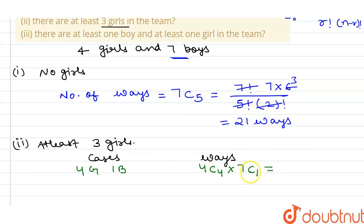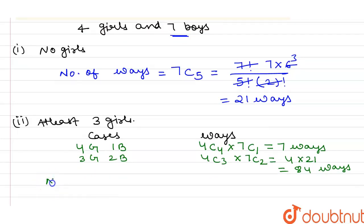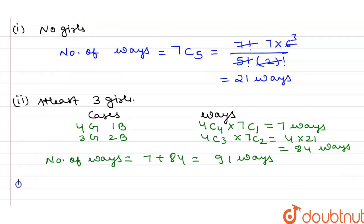4C4 × 7C1 equals 7 ways. Similarly, the second case is three girls and two boys. The number of ways is 4C3 × 7C2 = 4 × 21 = 84 ways. So total number of ways = 7 + 84 = 91 ways.